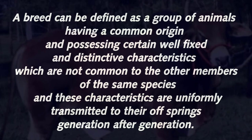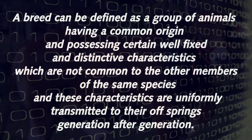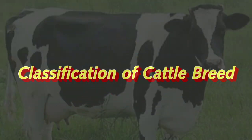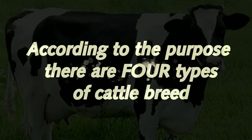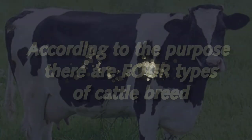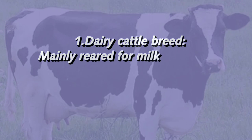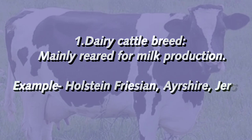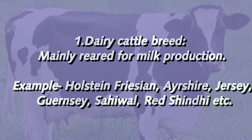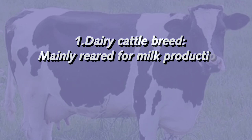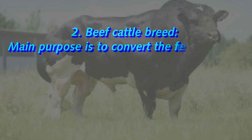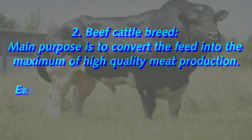Classification of cattle breed according to purpose — there are four types. Number one: dairy cattle breed, mainly reared for milk production. Holstein Friesian, Ayrshire, Jersey, and others are examples of dairy cattle breed.